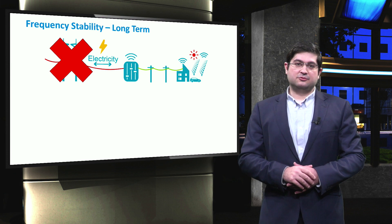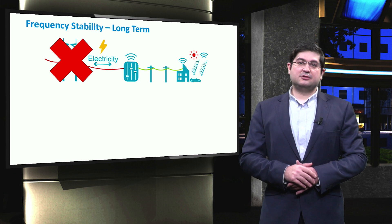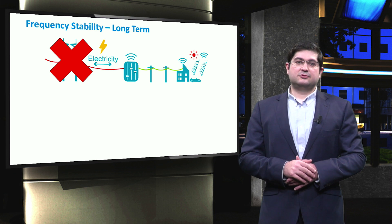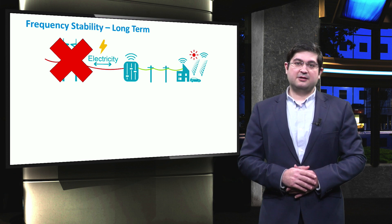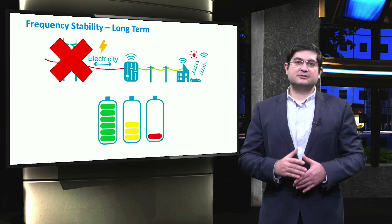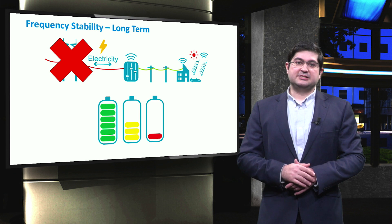After primary frequency control, the secondary frequency control will be activated, which is also known as the load frequency control. The secondary control is the main responsible to recover the frequency to the nominal value. In islanded microgrids, various components could support secondary frequency control, such as batteries.